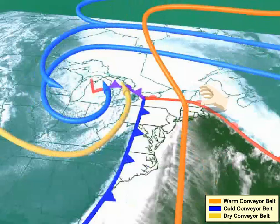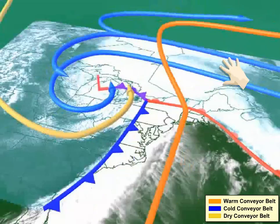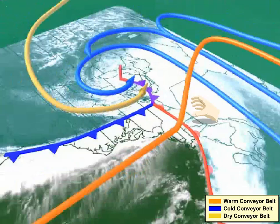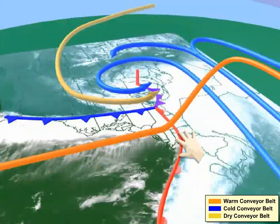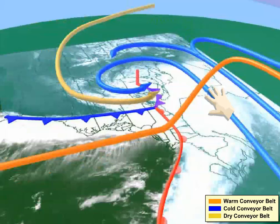Next, let's look at the cold conveyor belt here in blue. The cold conveyor belt is responsible for the westward transport of cool, moist air north of the warm front and back into the cold air west of the low. The cold conveyor belt actually travels under the warm conveyor belt north of the low's warm front, much like traffic moving under an overpass. As the cold conveyor belt travels under the warm conveyor belt, it gains some moisture as precipitation evaporates into its westward-moving stream of cold air.